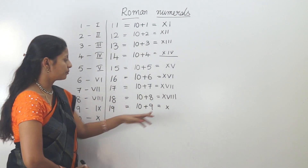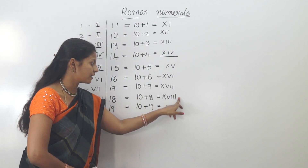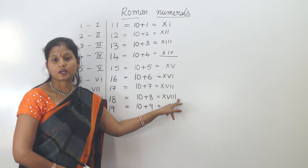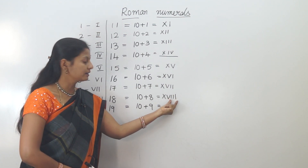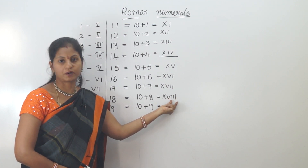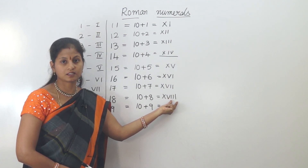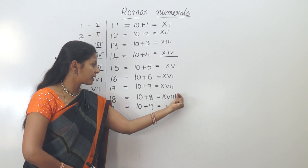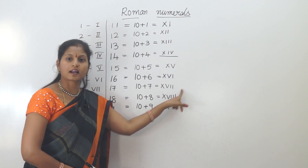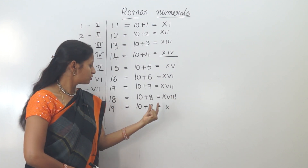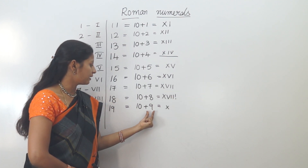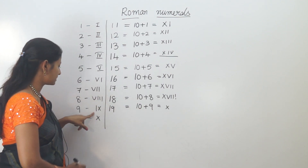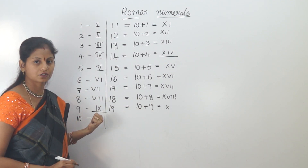For 9, we cannot simply write it as a sequence. Nine is not 1 plus 8. We need to think of it differently. Ten plus 9 — here 9 means X minus 1, so we use subtraction.